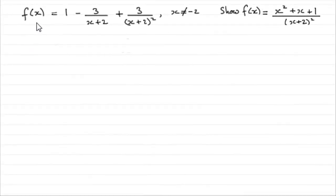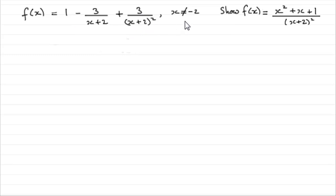In this question we're given that f of x equals 1 minus 3 over x plus 2, plus 3 over x plus 2 all squared, where x doesn't equal minus 2. And we've got to show that f of x equals x squared plus x plus 1, all over x plus 2 squared.